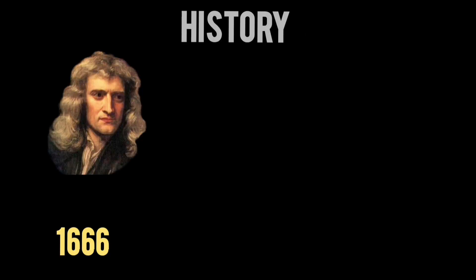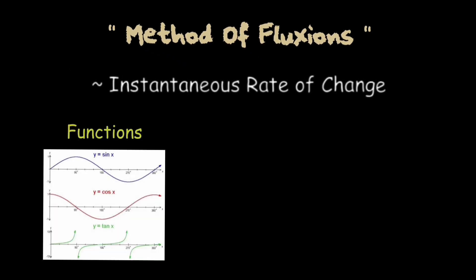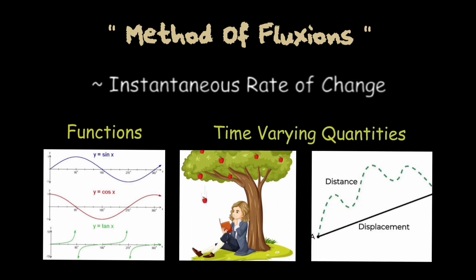It was the year 1666 when Newton at the age of 23 started working on a form of calculus, which he called the method of fluxions. Fluxions is the instantaneous rate of change, or gradient of a function, or a time varying quantity.